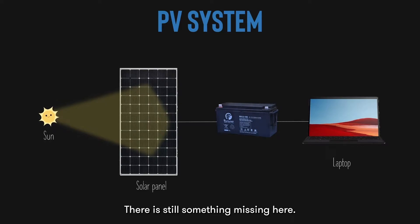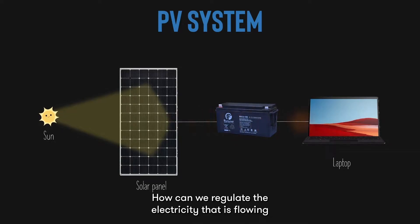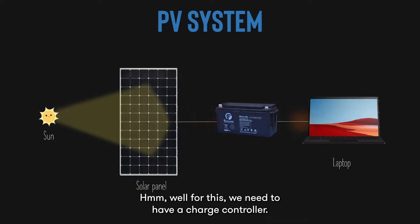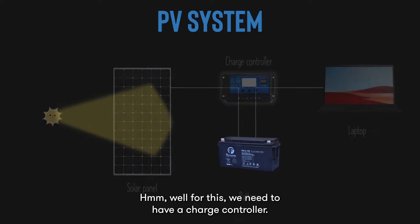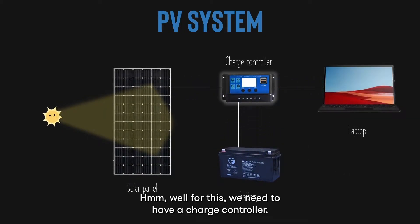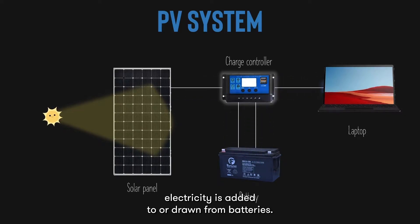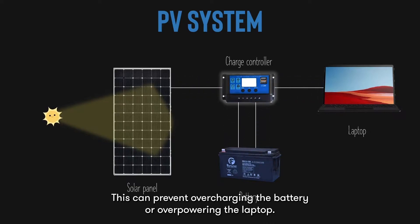There is still something missing here. How can we regulate the electricity that is flowing into the battery and coming out from the battery? Well, for this we need to have a charge controller. A charge controller limits the rate at which electricity is added to or drawn from batteries. This can prevent overcharging the battery or overpowering the laptop.